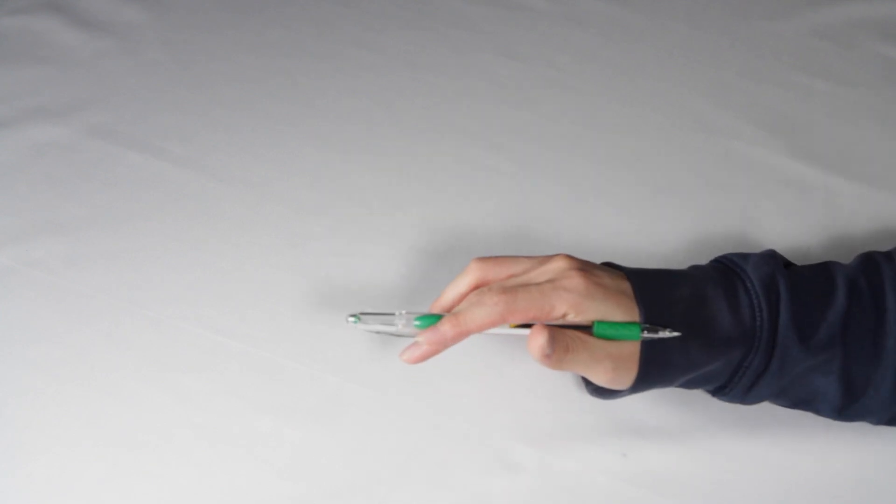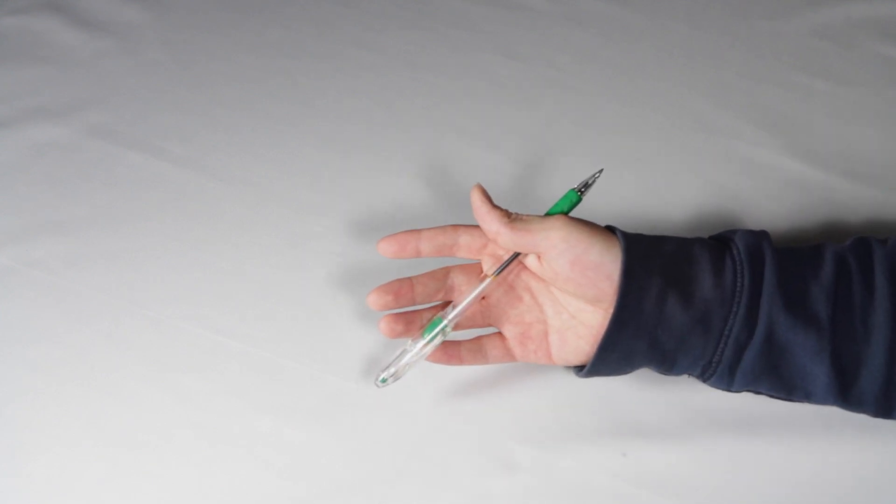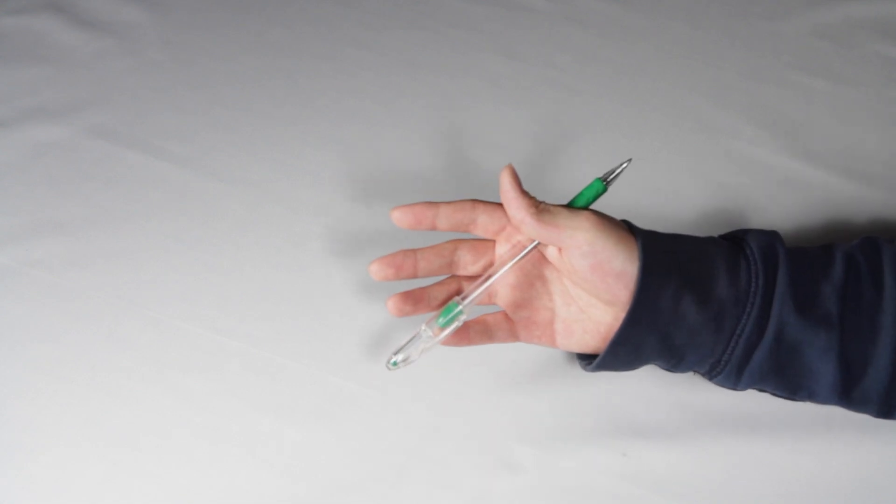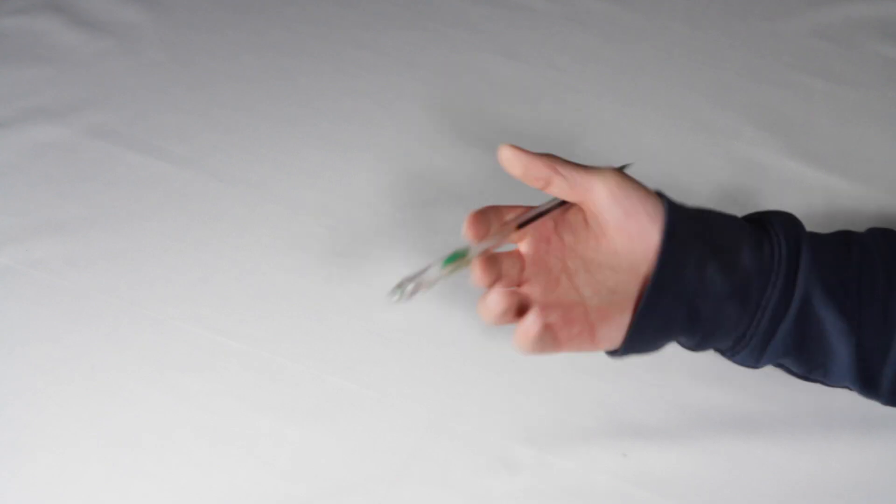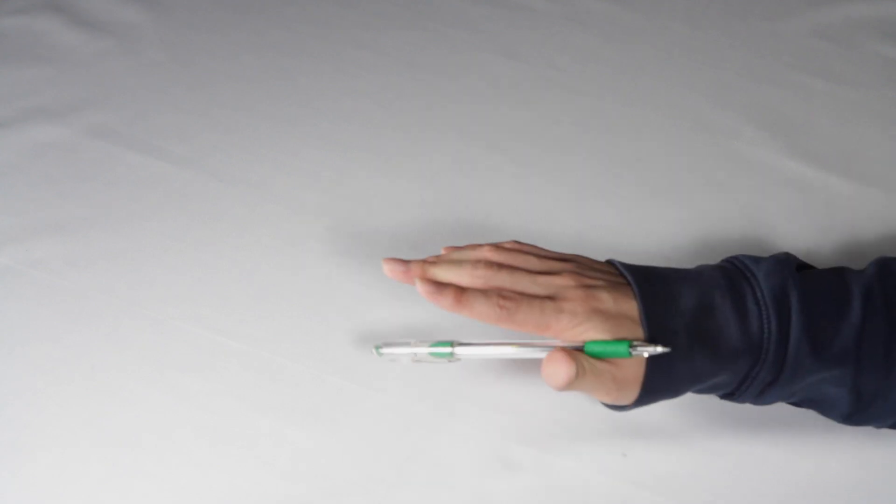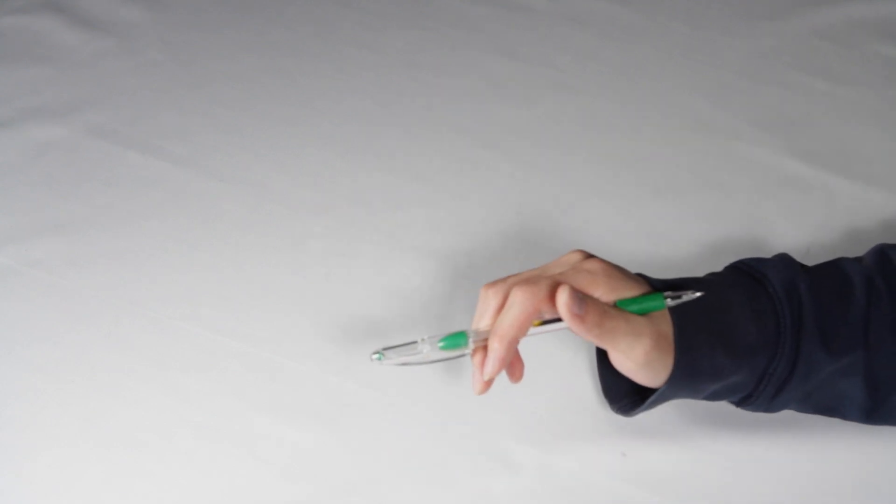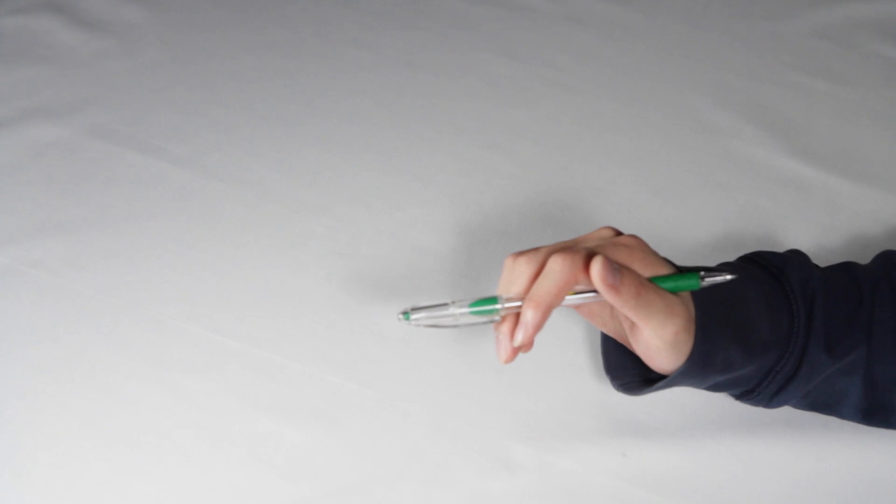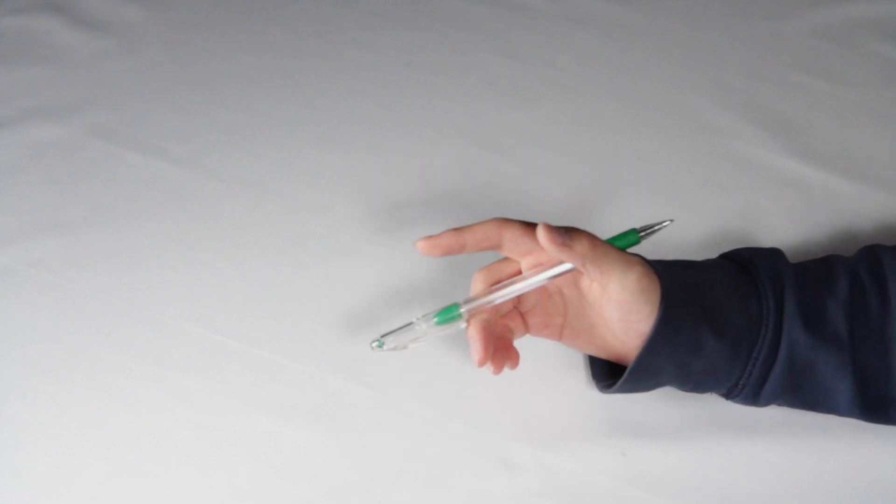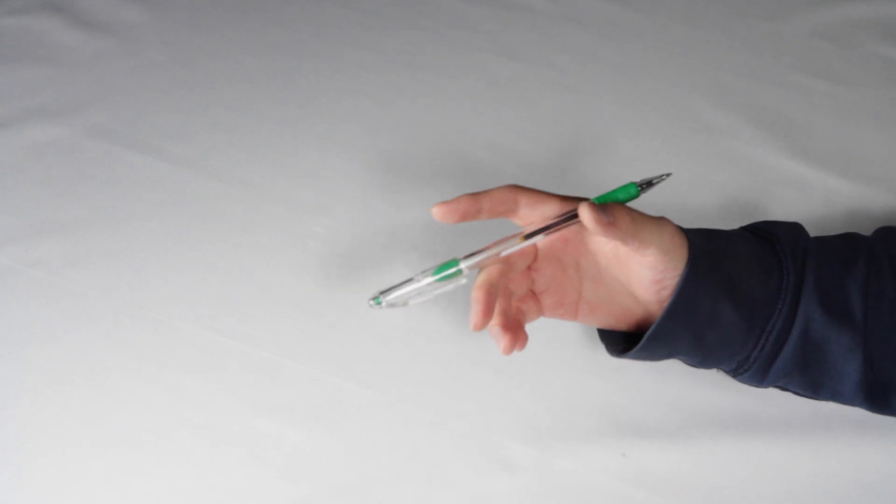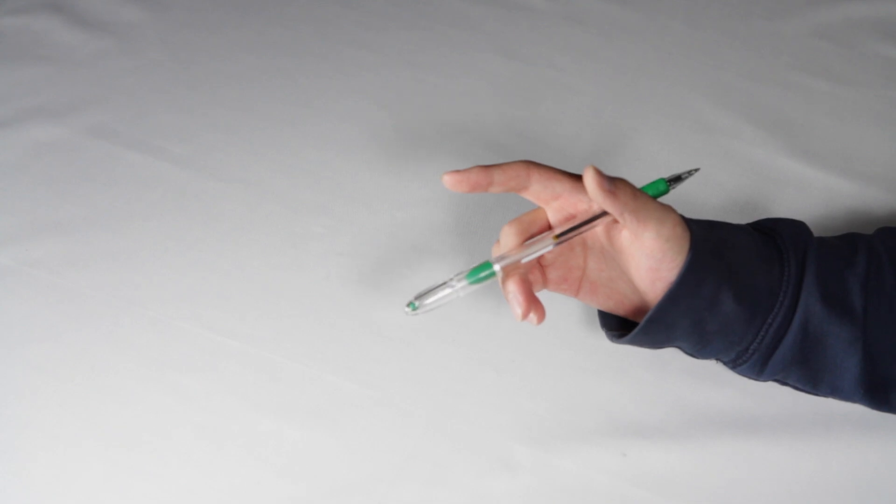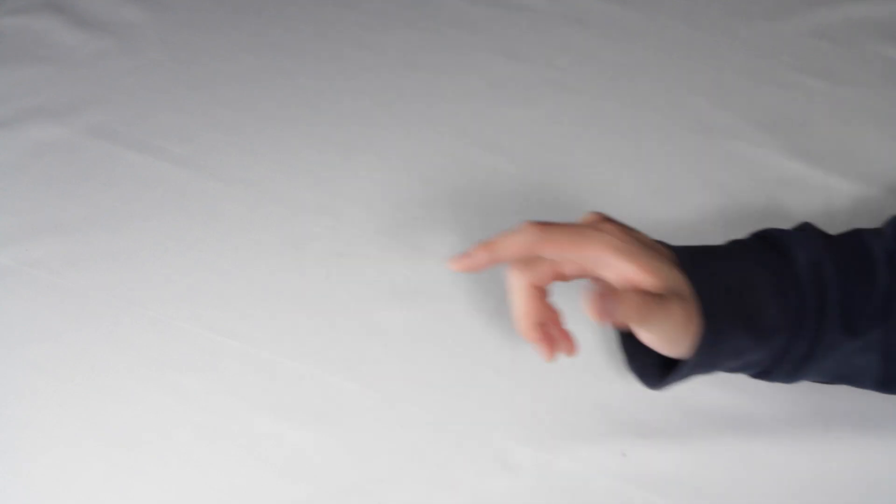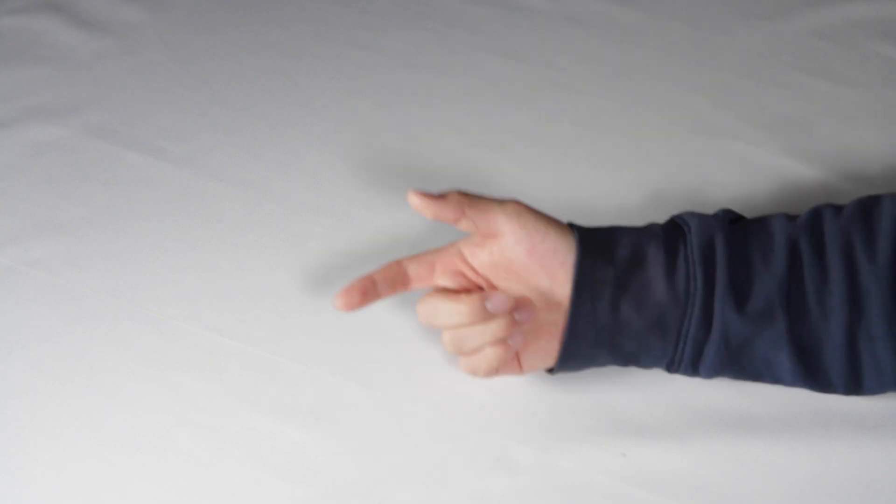Instead of turning your hand over like this, you need to do something a little bit different. The motion for the fingerless thumb around is not like turning your hand over, it's more so like pushing it forward like this. The reason you need to do that is because you can hold it like this, have it rest on top of your middle finger.